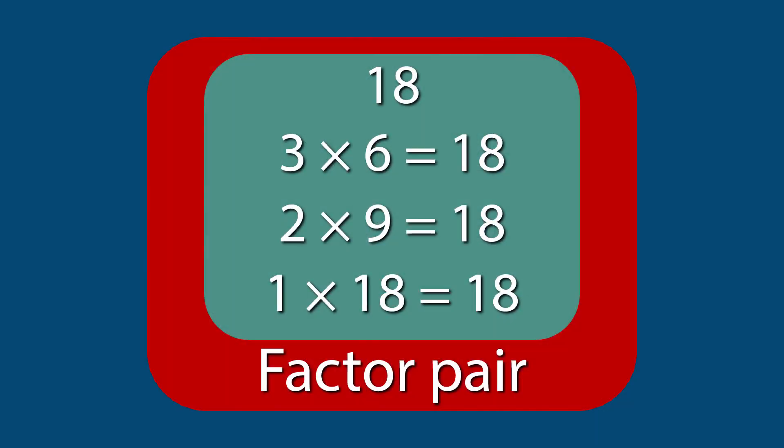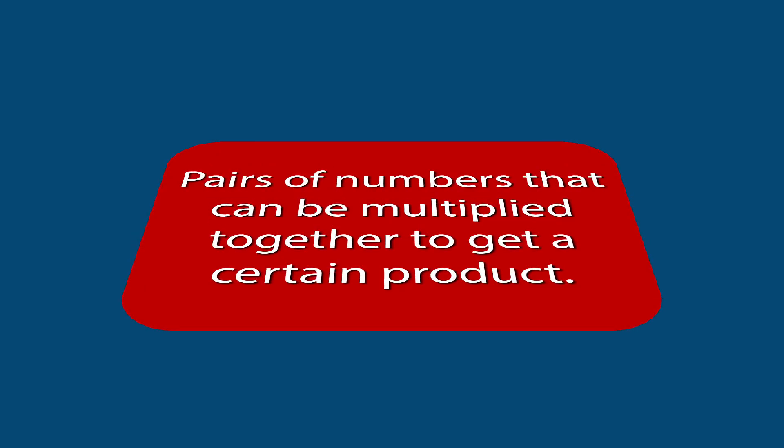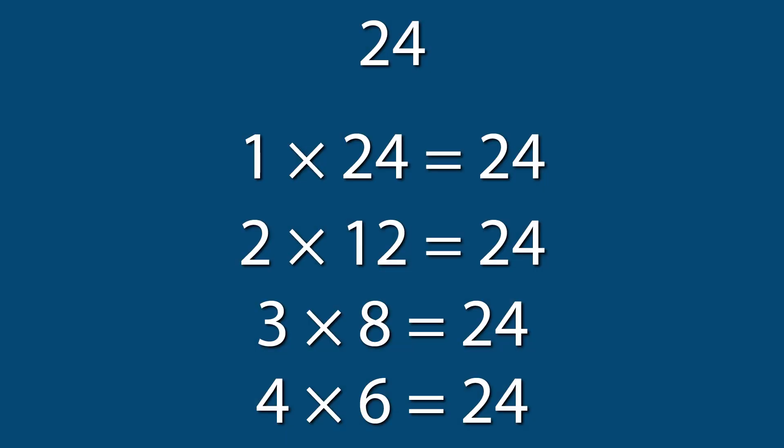These are the words factor pair. Factor pairs are pairs of numbers that can be multiplied together to get a certain product. For example, factor pairs of 24 could be 1 and 24, 2 and 12, 3 and 8, or 4 and 6.